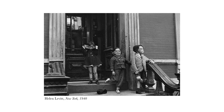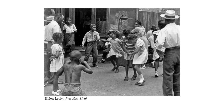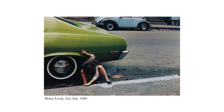Helen Levitt is a noted street photographer who documented New York — in particular the children of New York. Born in Brooklyn, she was heavily influenced by Cartier-Bresson and Evans, with whom she later became friends. Her work depicts a sense of place and the everyday urban environment of the streets of New York and how that evolved over time. She became quite dismayed later, saying children are not playing on the streets anymore, and you can see this shift from the 40s image to the 80s.